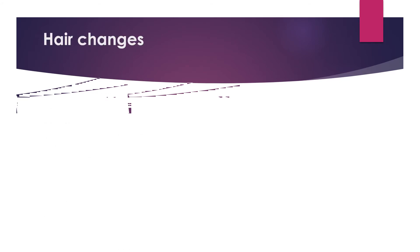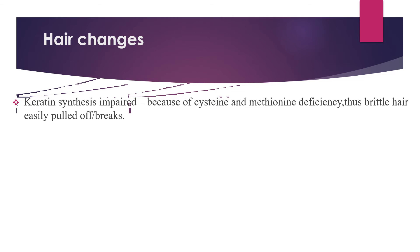Hair changes occur due to different reasons. The first is keratin synthesis impairment because of cysteine and methionine deficiency in severe acute malnutrition. Cysteine and methionine are needed for keratin production; their deficiency causes hair to be brittle and easily pluckable.